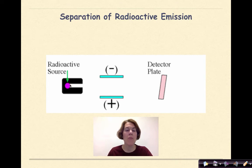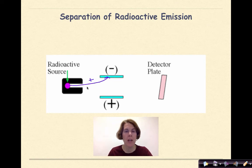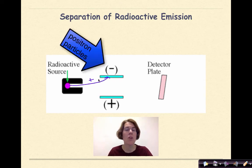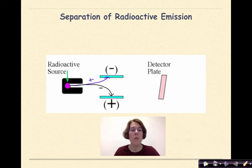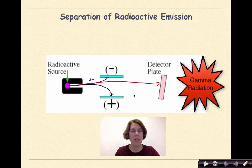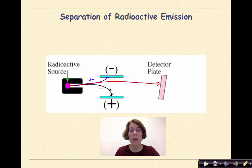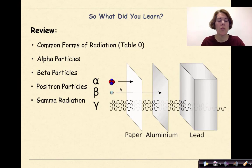When a radioactive source is released and its radiation is attracted to a negatively charged plate, that emission must have an overall positive charge — opposites attract — so we classify it as either a positron or an alpha particle. If the radiation is attracted to the positive plate, it has an overall negative charge, most likely beta particles. If the radiation is not attracted to either plate, it has no charge — that means it must be gamma radiation.